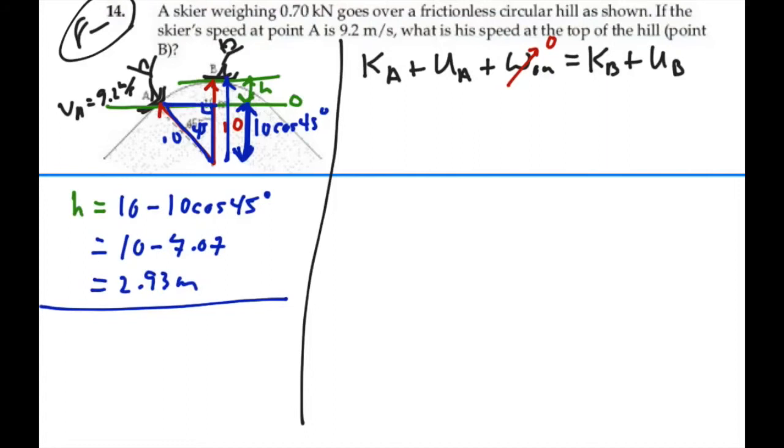We do have movement at A. We're moving at 9.2 meters per second. So there is kinetic energy at A. So we have one half mass velocity at A squared. Our potential energy at A has been defined to be zero because we have a zero height at point A. So we have zero for our potential energy at A.